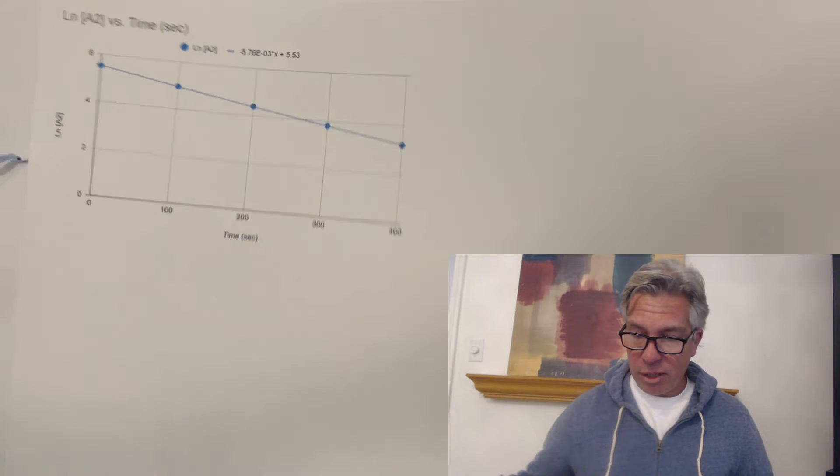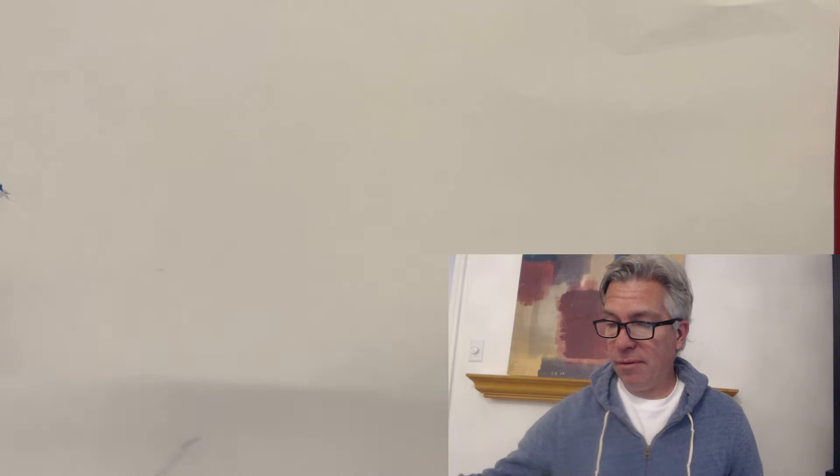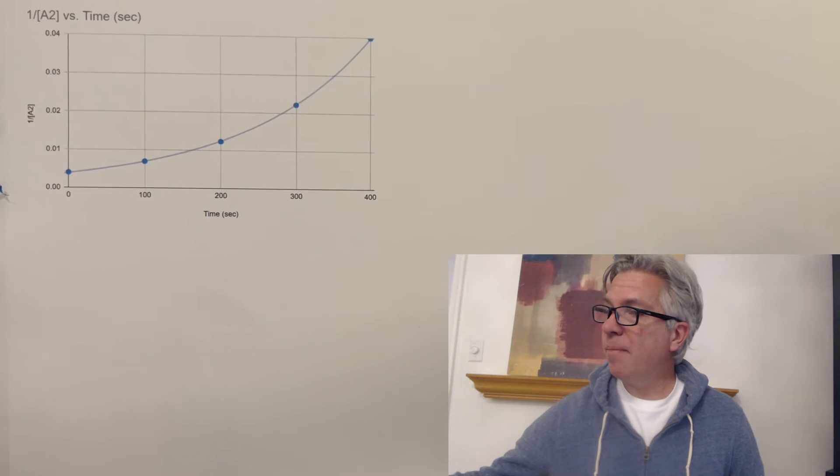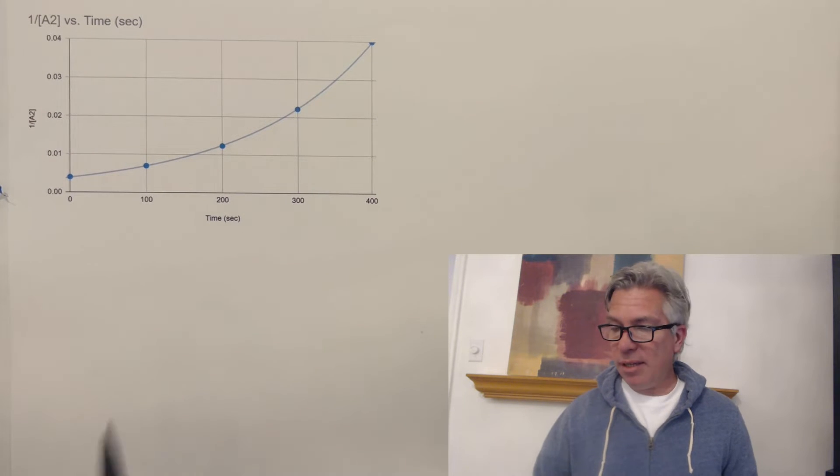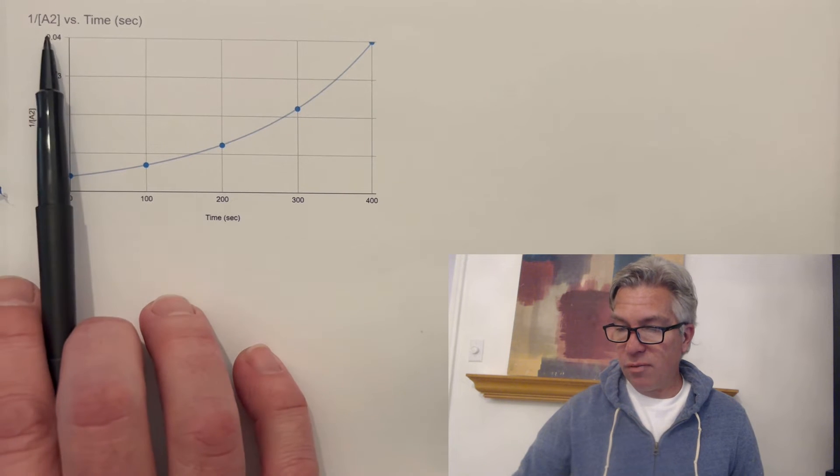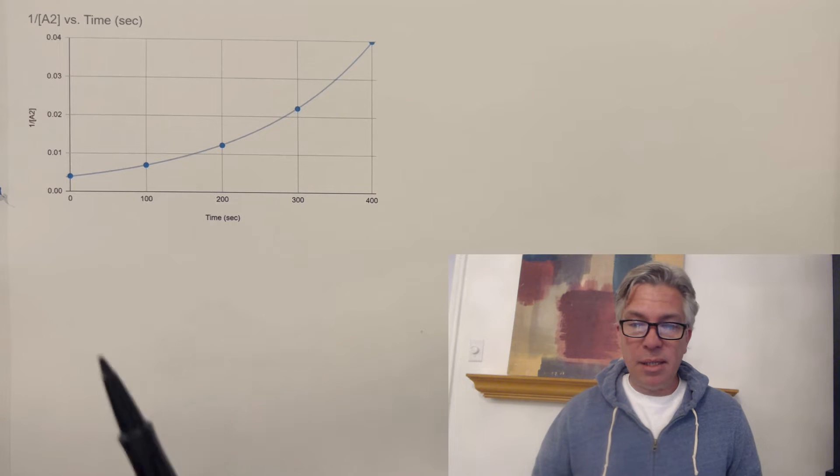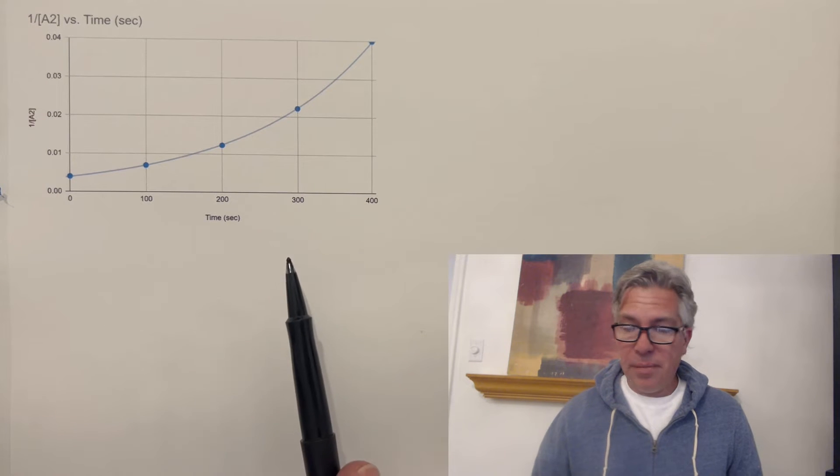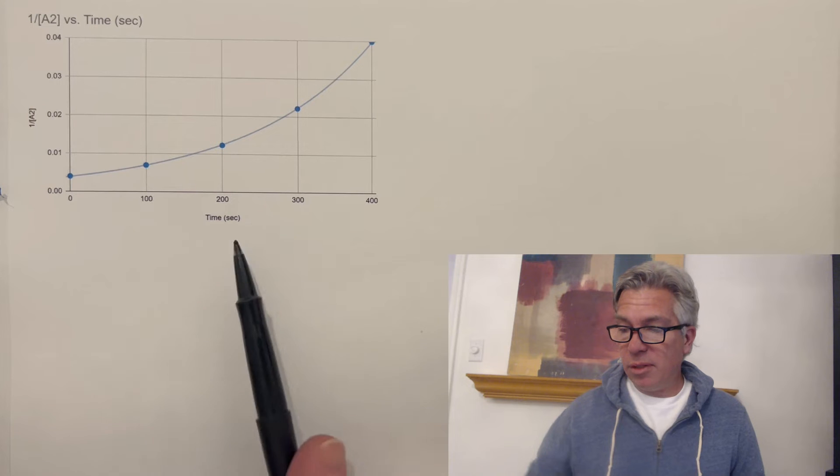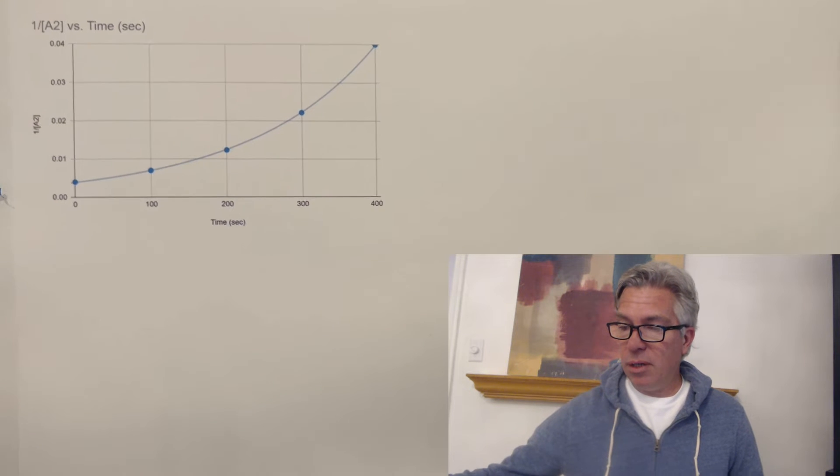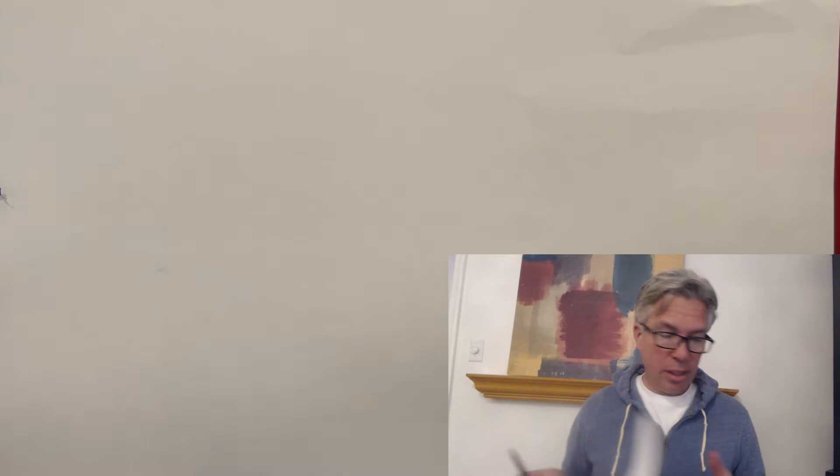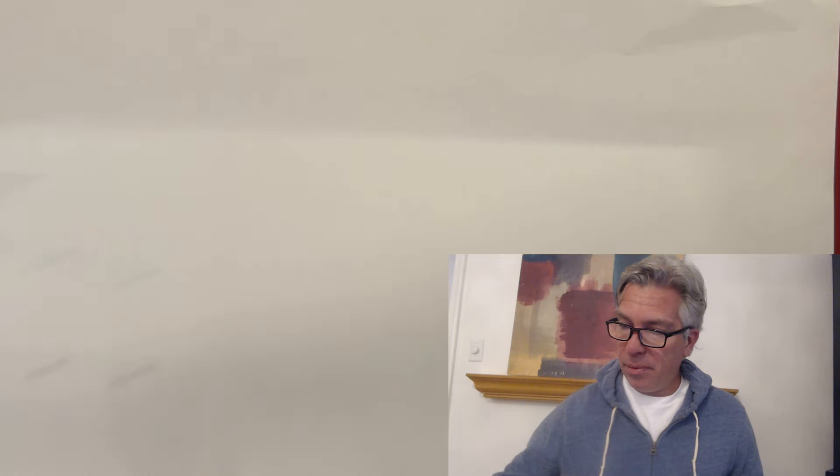But just for fun, I actually did plot the inverse graph. So you can see what that would look like. And if you plot an inverse graph, inverse of concentration versus time, and you get this exponential looking curve, that means, of course, it's not second order. And that's typical for a second order, but not, or for a first order, but that's not second order.